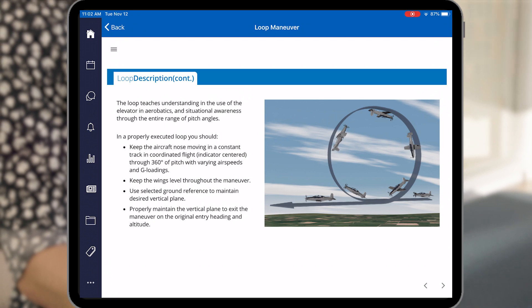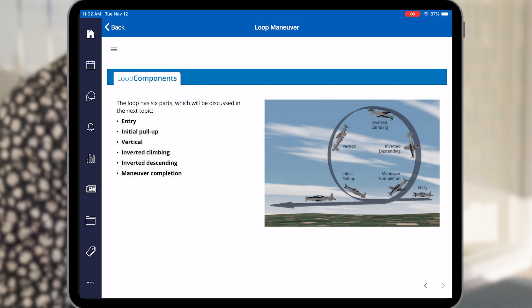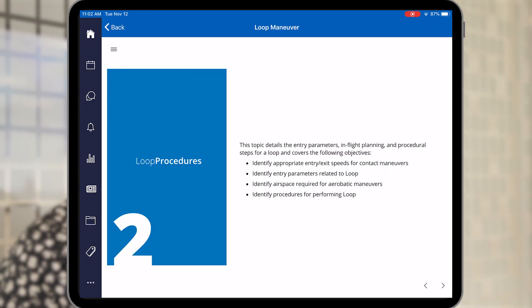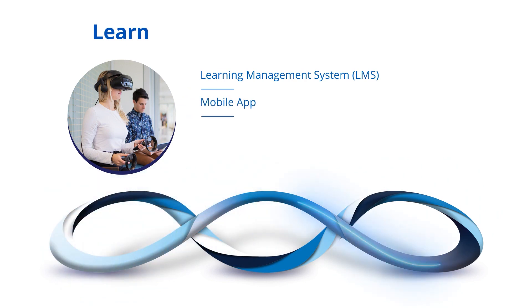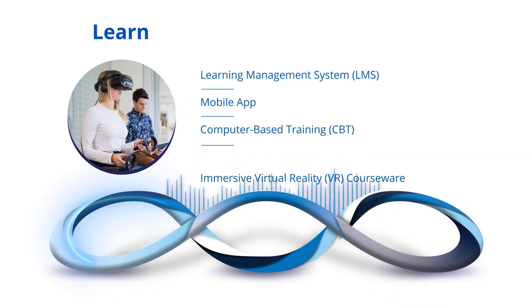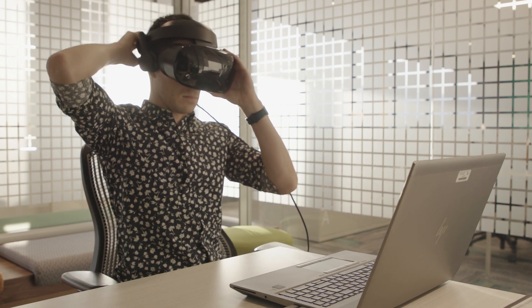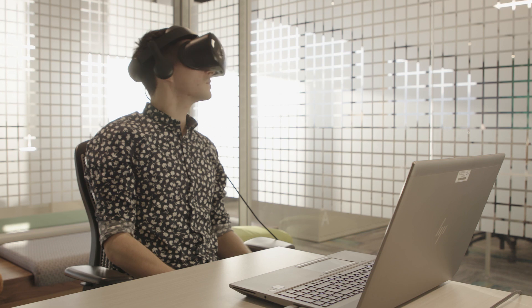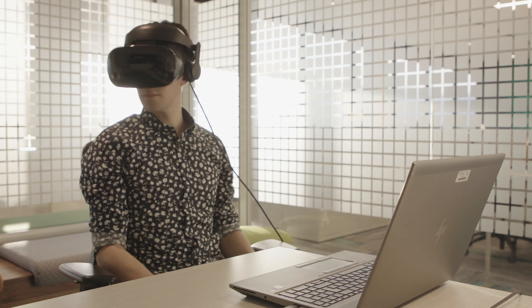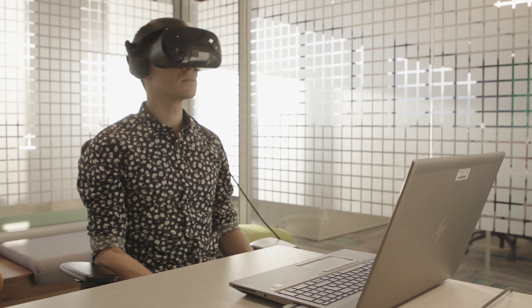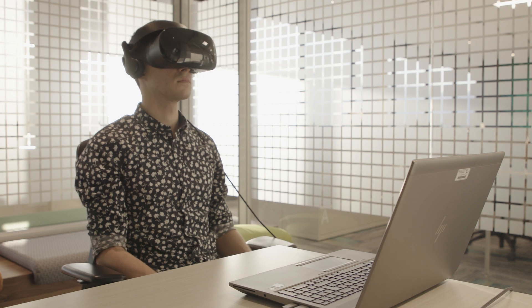The student starts with an introduction to the maneuver on their tablet. This courseware outlines the elements and sequence of the maneuver — this is the learn segment, acquiring the knowledge for a given maneuver. Next, the student moves to the immersive courseware. Using a VR headset, the student flies through the maneuver, building familiarity and creating a level of spatial awareness and a proper scanning pattern.